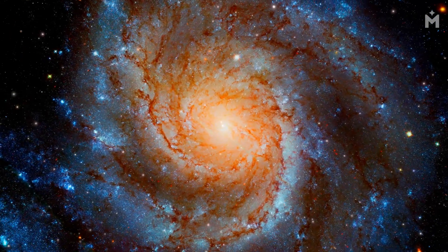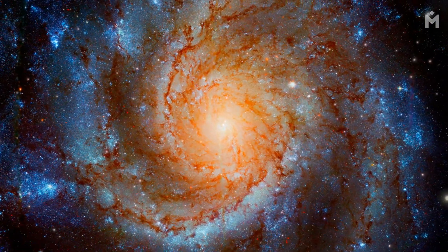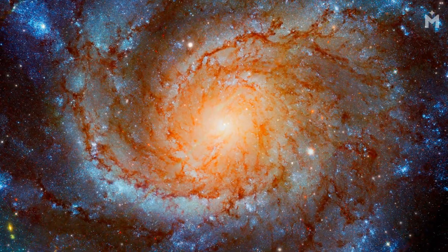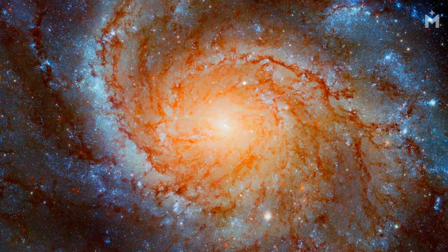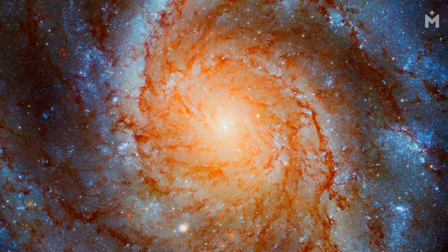The odds of a star passing too close to a black hole are pretty slim. In our Milky Way galaxy, there are an estimated 100 million black holes. But there are also an estimated 100 billion stars. So, the odds of any one star passing too close to a black hole are about one in a million.